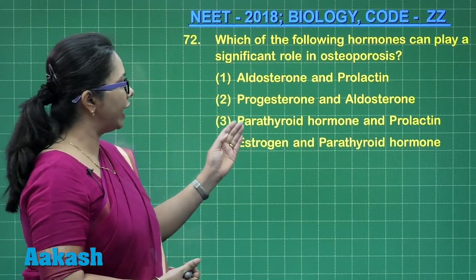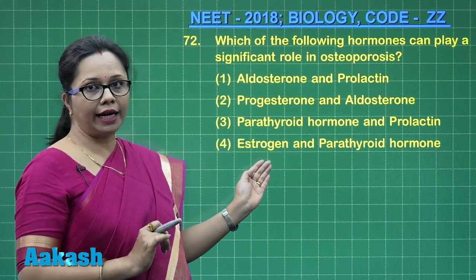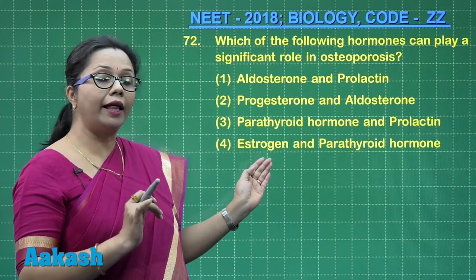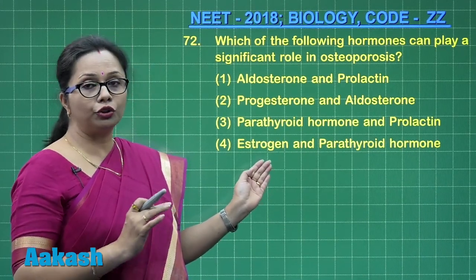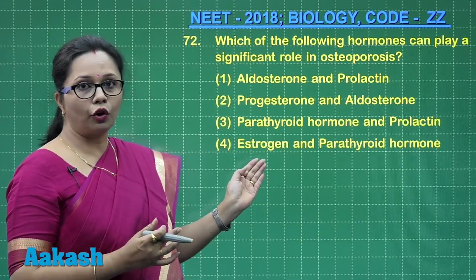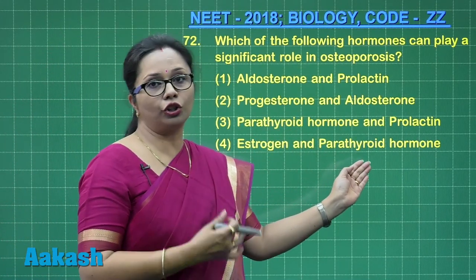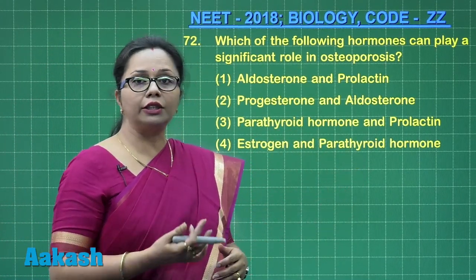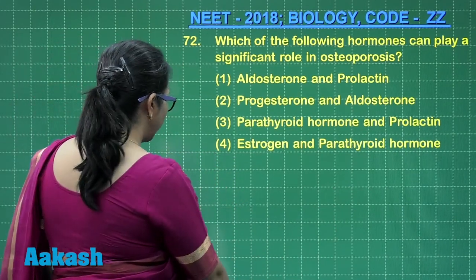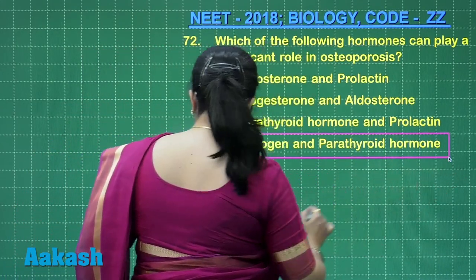Estrogen, in the case of females, inhibits osteoclast activity and protects from osteoporosis. That is why after menopause, when estrogen secretion is insufficient, there are greater chances of osteoporosis. Parathyroid hormone increases osteoclast activity, so excess parathyroid hormone can also lead to osteoporosis. Therefore, the correct answer is option 4.